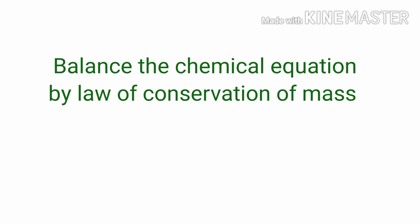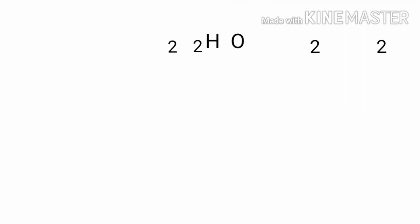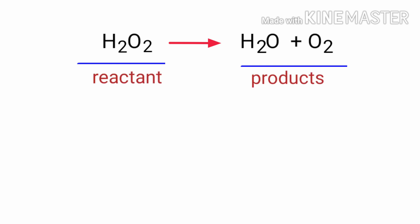Balance the chemical equation by law of conservation of mass. Hydrogen peroxide gives us water plus oxygen. In this equation, the reactant is hydrogen peroxide and the products are water and oxygen.